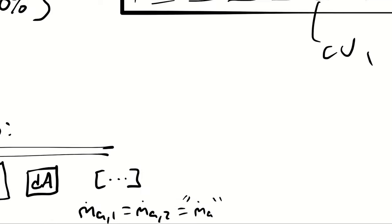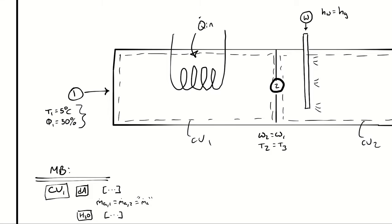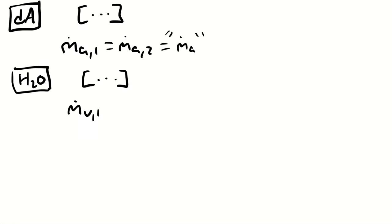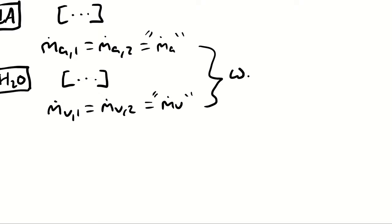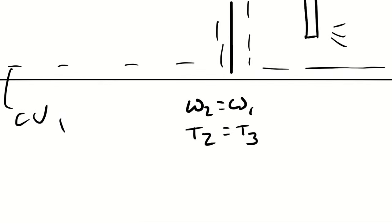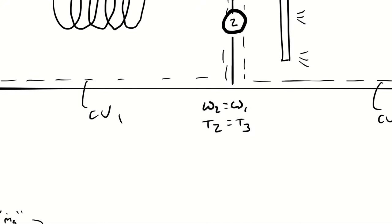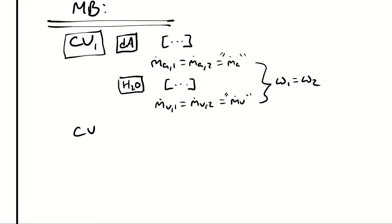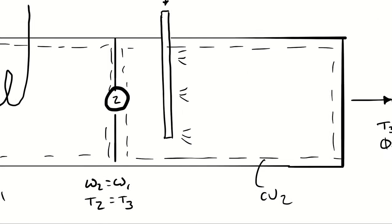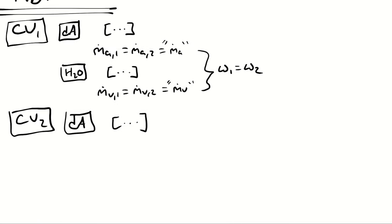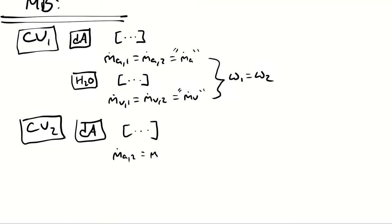The water vapor in CV1 is likewise simple — no opportunities for water to enter or exit other than as water vapor at states 1 and 2, which leads to the conclusion that omega 1 equals omega 2. That's how I was able to define one of the two independent intensive psychrometric properties at state 2. For CV2, dry air is simple: no opportunities for dry air to enter or exit except at states 2 and 3, so ṁ_a2 equals ṁ_a3, which is just ṁ_a.